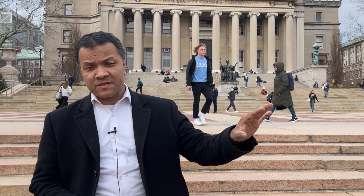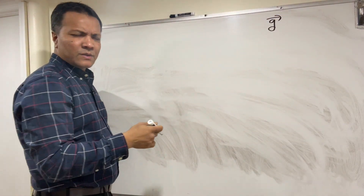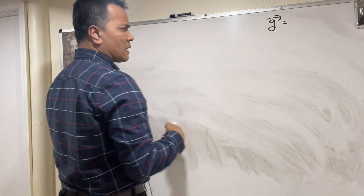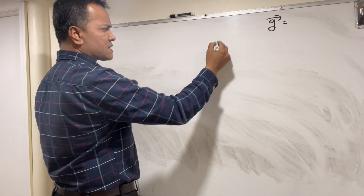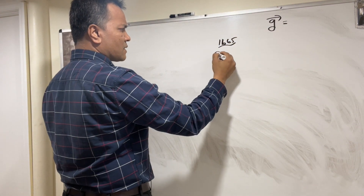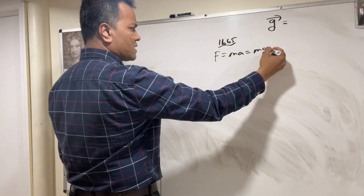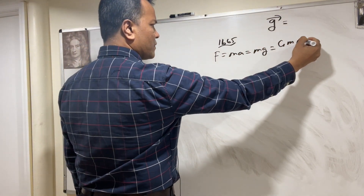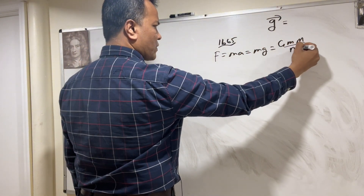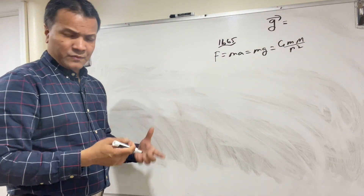When we talk about electric field, we really start our conversation with the gravitational field. When we talk about the g field, what are we talking about? I'm going to take you to 1665 — Sir Isaac Newton conceptualized F = ma, which is F = mg, which is GMm over r squared. Our hypothesis is that all are the same, and that's what we're going to prove.